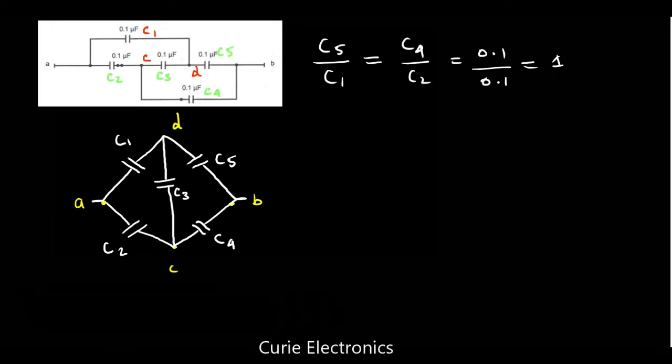When bridge is balanced, what we do usually? If it is a resistance circuit, we will remove the component connected here. It is like an open circuit. Now this C3 is just like an open circuit. Because if we apply potential across A and B, the potential at D and potential at C is going to be same. Then there is no current flow through this C3 capacitor. So it acts like an open circuit. Now we can redraw the equivalent circuit.